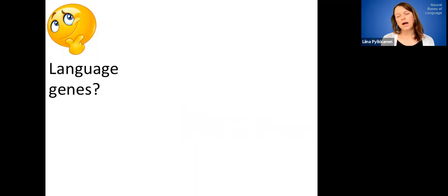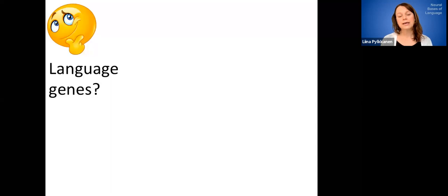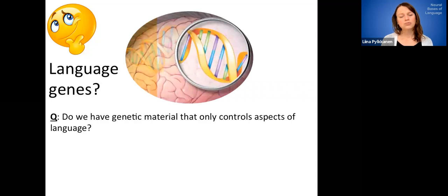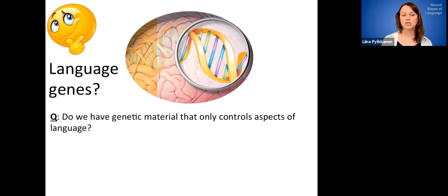Okay. Well, our brains, of course, are the way they are because of our genes. So we could ask whether it's possible to ask the domain specificity question more intelligently, more coherently in the genetic domain. So the question would be, do we have genetic material that only controls aspects of language? That would be the gene version of that same question.